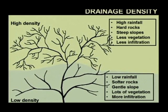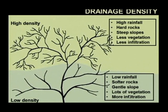Now if we look at the one below, you only need to study the one, because the other one is just exactly the opposite. The high density — there are my reasons; low density — here are my reasons, exactly the opposite. High rainfall versus lower rainfall, because you have far less streams. Hard rocks versus soft rocks, steep slopes versus gentle slopes, less vegetation versus lots of vegetation, less infiltration versus more infiltration.